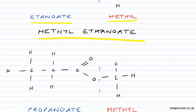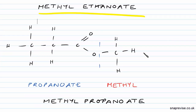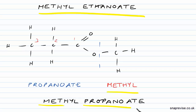If we have a look at another example, you can see our R group over here is still a methyl group. However, the acid that was used was propanoic acid — it has one, two, three carbons. So we have methyl propanoate. I find it really useful to draw this temporary dividing line in here whenever I'm naming my esters. It really does help.